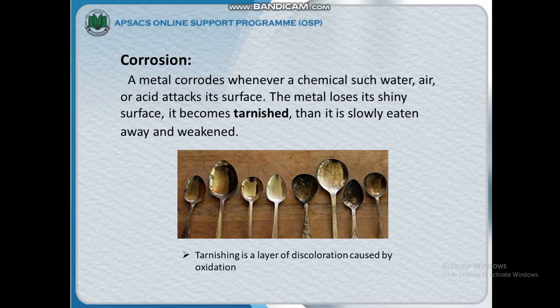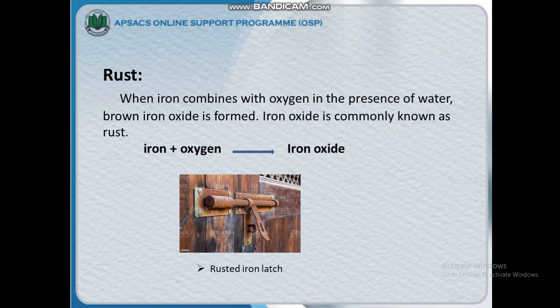A metal corrodes whenever a chemical such as water, air, or acid attacks its surface. The metal loses its shiny surface and becomes tarnished, then it is slowly eaten away and weakened. Tarnishing is a layer of discoloration caused by oxidation.